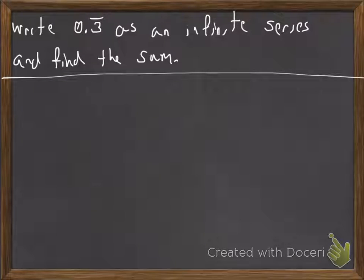Alright, in this example we're going to write 0.3 repeating as an infinite series, and then we're going to also find the sum.